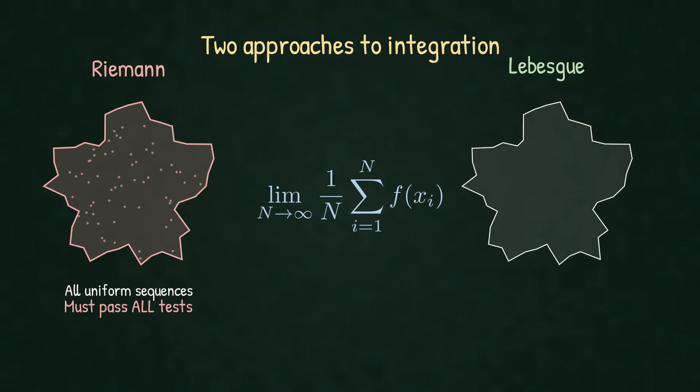Lebesgue is smarter. We test only with a structured subset: sequences from irrational rotation. And for each function, we are allowed to remove a negligible set, one that can depend on the function itself. It's flexible, yet still meaningful. Both approaches still use uncountably many tests. But Lebesgue's tests are well chosen. Structured plus flexible beats exhaustive and rigid.